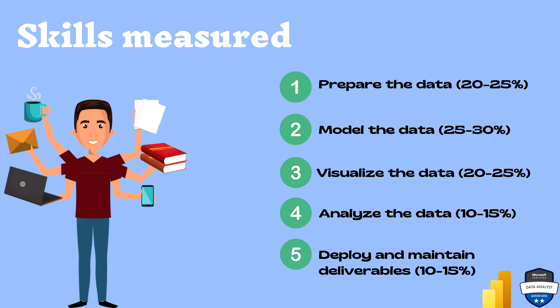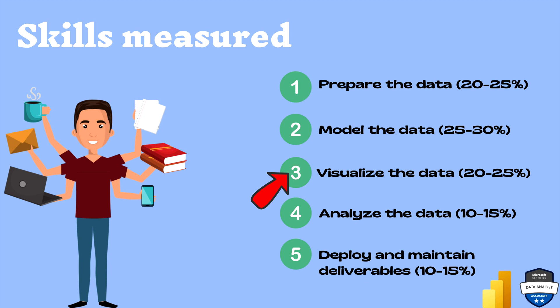There are five types of skills measured in this exam, and all questions are based on these five topics. The first is Prepare the Data, which is 20 to 25%. The second is Model the Data — covering data modeling concepts, relationships, and more — at 25 to 30%. The third is Visualizing the Data, which includes plotting graphs, charts, different visualizations, and custom visualizations, at around 20 to 25%.